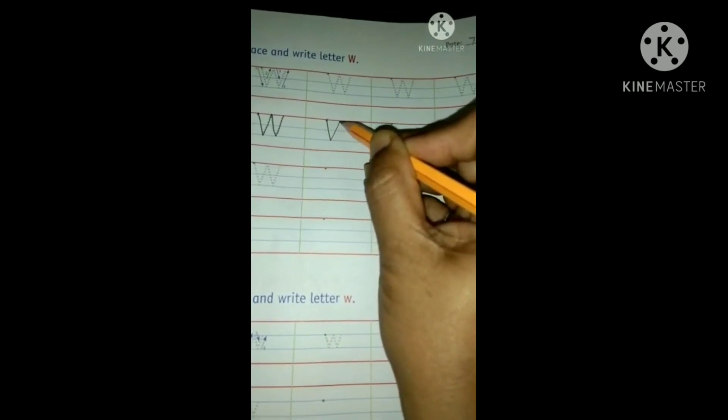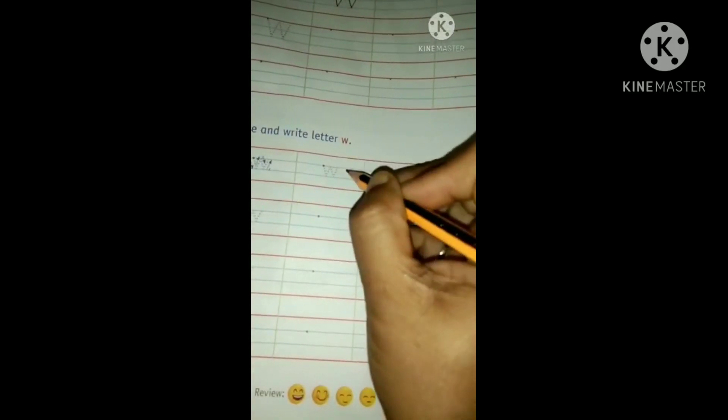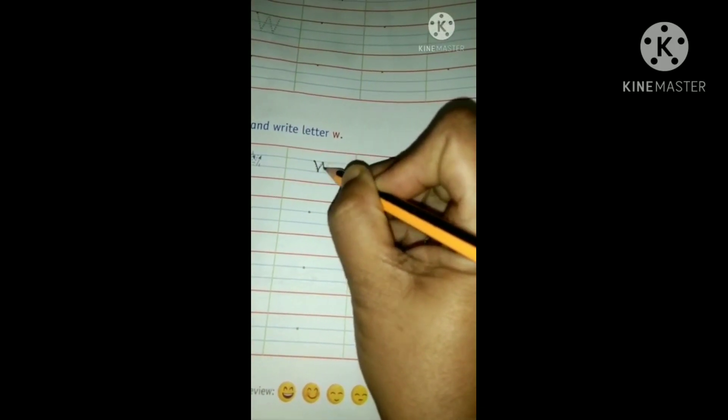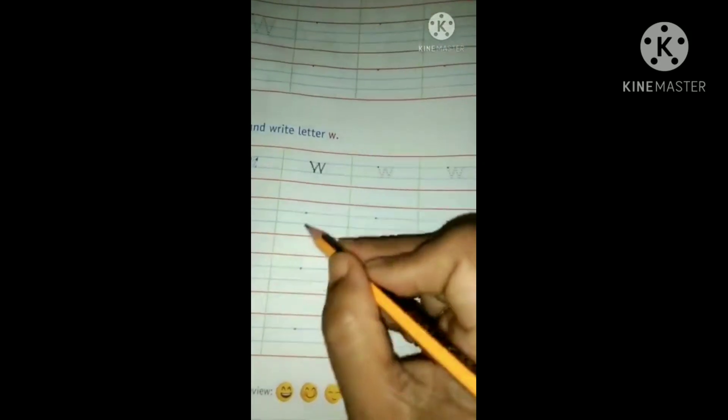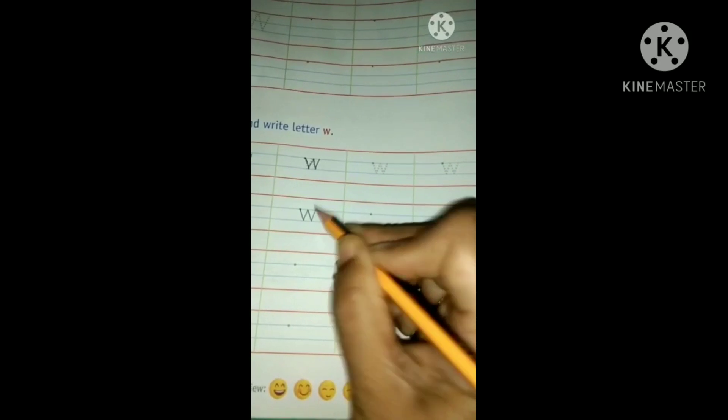While you are writing, write in this way. In the same way, within two blue lines, small letter W. Done.